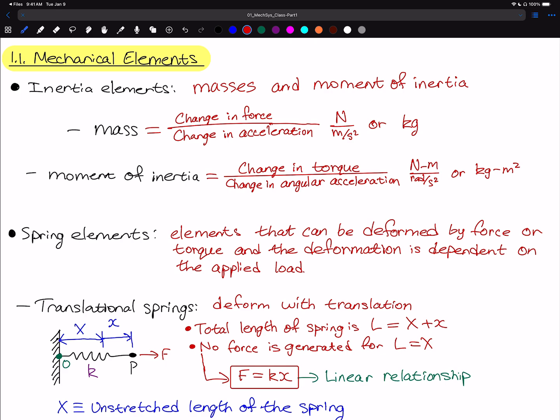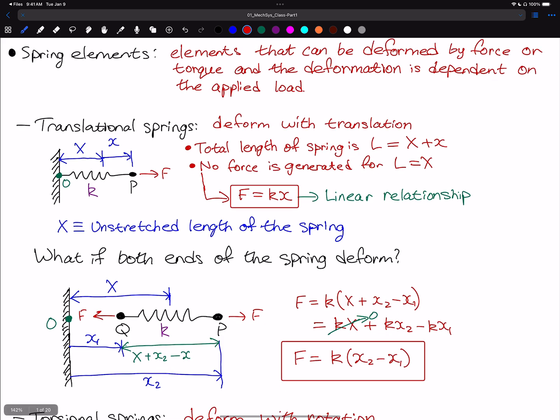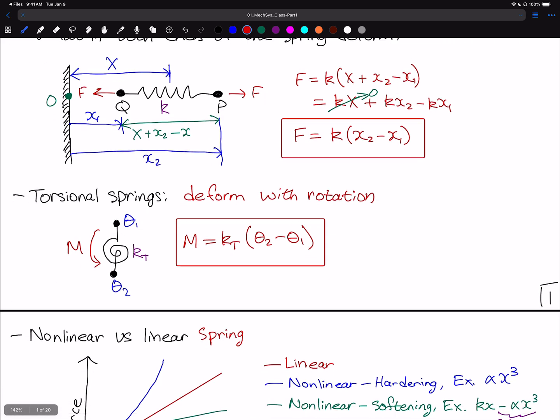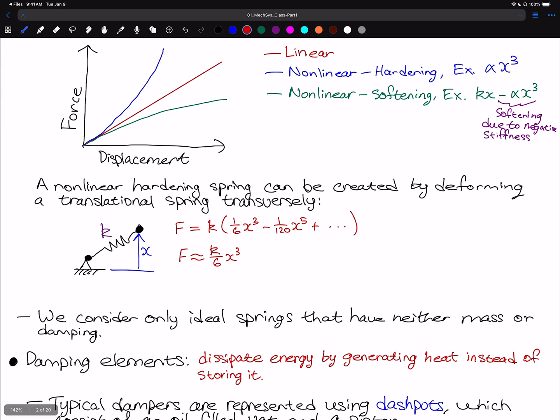In the previous video, we started discussing mechanical elements. We looked at inertia elements, both mass and moment of inertia. We then talked about spring elements, starting with translational springs, and then looked at torsional springs. We had a discussion of linear versus nonlinear springs, and talked about hardening versus softening behavior. We looked at an example of a translational spring with a cubic nonlinearity. I just wanted to add here that you can also have nonlinear rotational springs, where you would have something like kt times theta cubed.